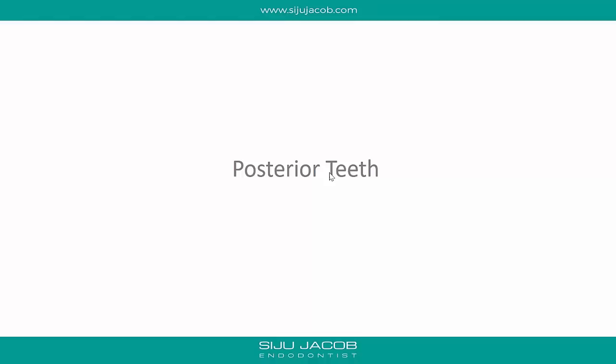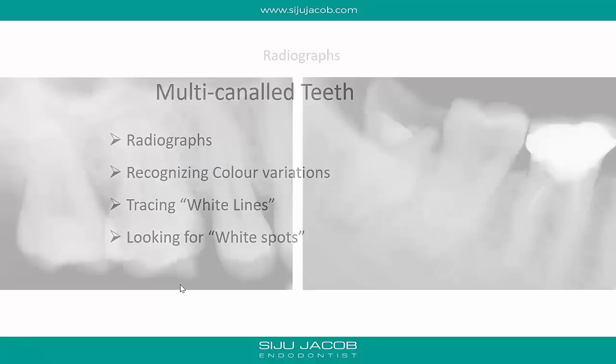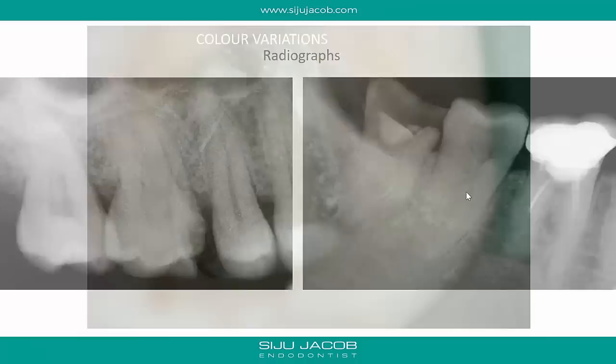For posterior or multi-rooted teeth, one relies on radiographs, color variations, tracing white lines, and looking for white spots. Radiographs help you determine whether the tooth is calcified so you can anticipate this before starting. For example, if you look at a radiograph where the pulp is clearly visible in one tooth but completely obliterated in another, you know you won't feel the typical drop when drilling the obliterated tooth — so you can be mentally prepared to encounter calcification.